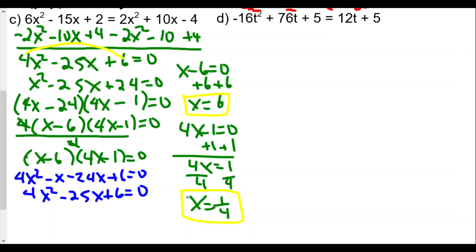Now for D, we have a different letter, it's not x, it's t now. We have -16t² + 76t + 5 = 12t + 5. I mentioned before that we want to move everything over to one side, but we also want to make sure that whatever is squared is positive. So we're going to add 16t² to both sides, subtract 76t, and subtract 5.